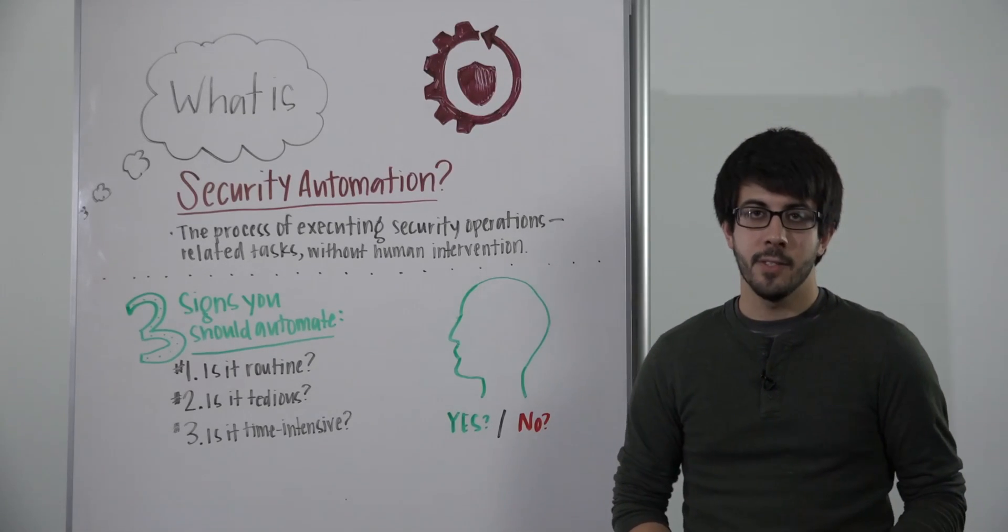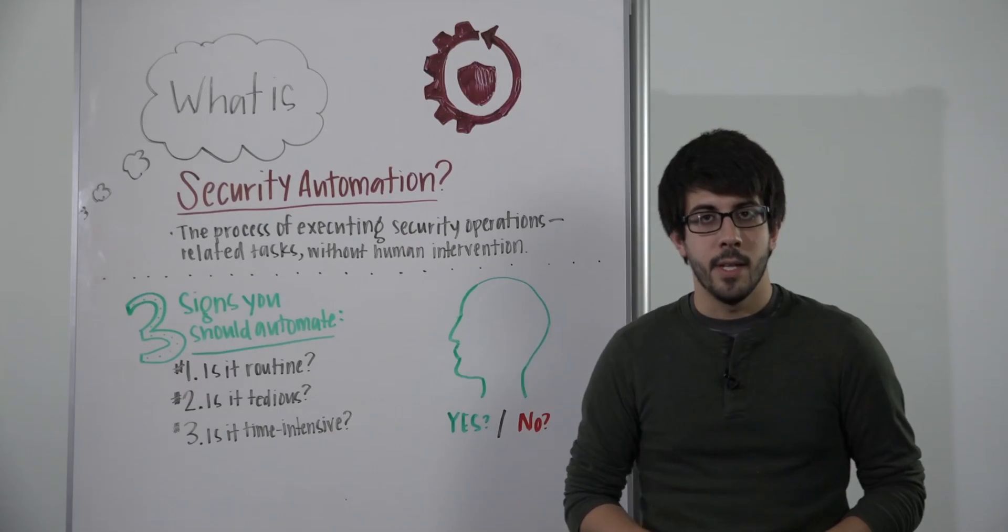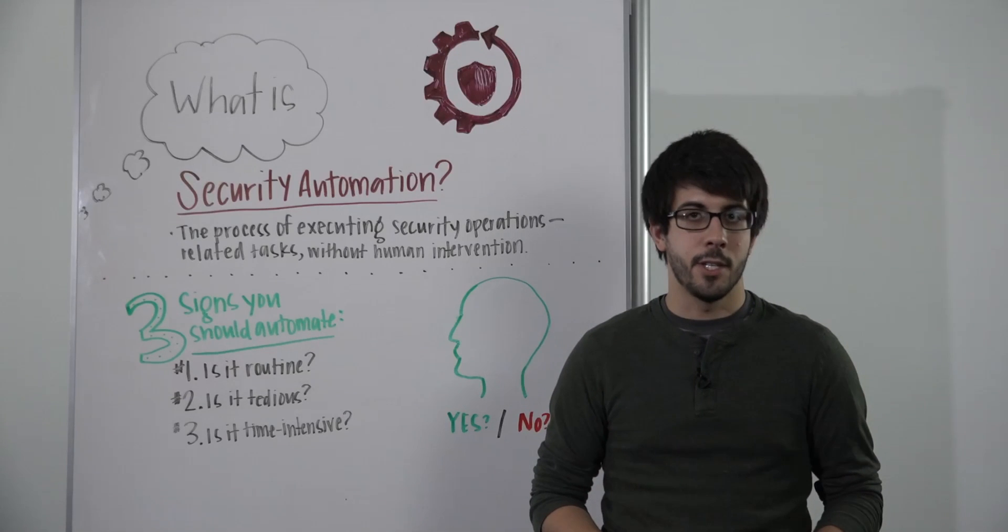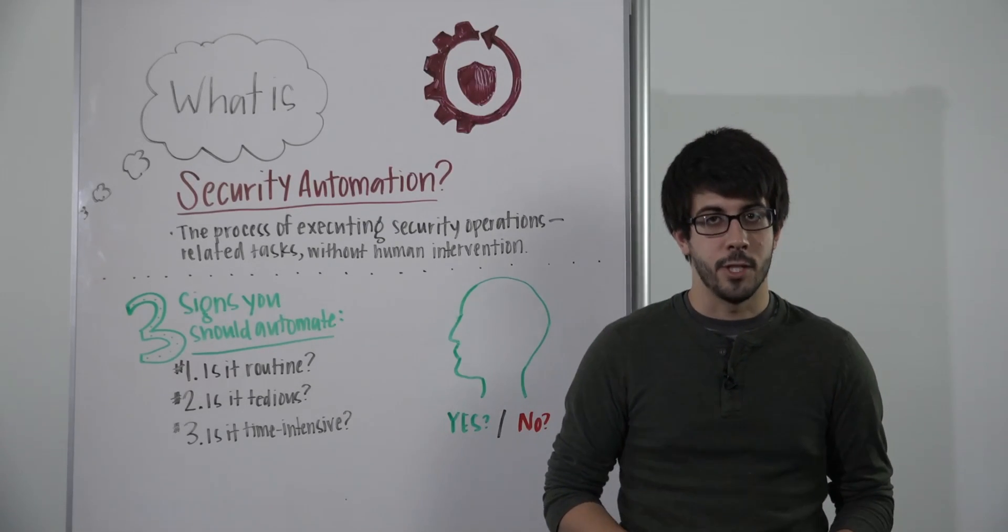There are three tell-tale signs that a task should be automated. Number one, is it routine? It needs to be done on a very regular basis. For example, every day security teams check their inboxes to see if anyone has forwarded any potential phishing emails.